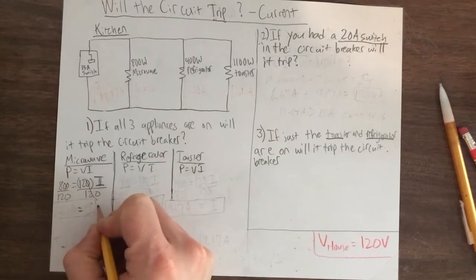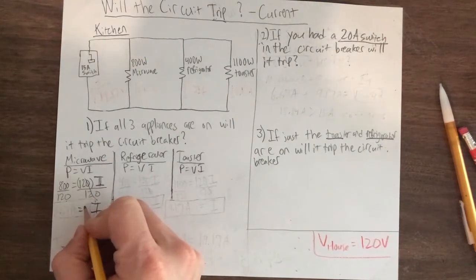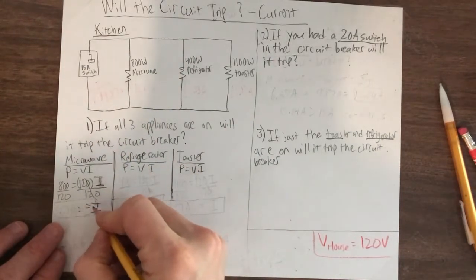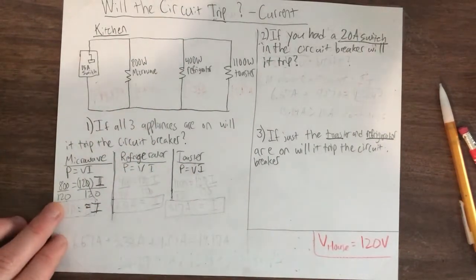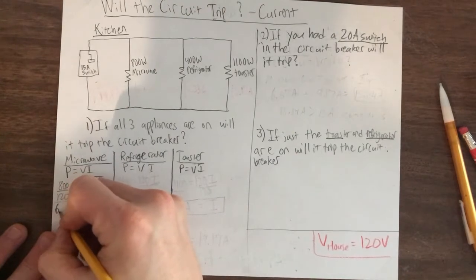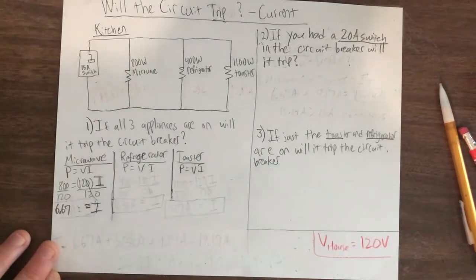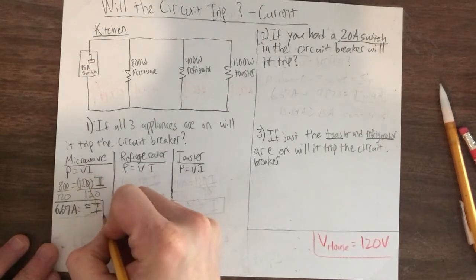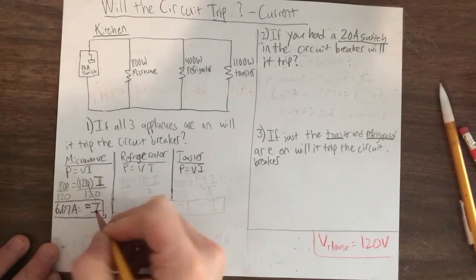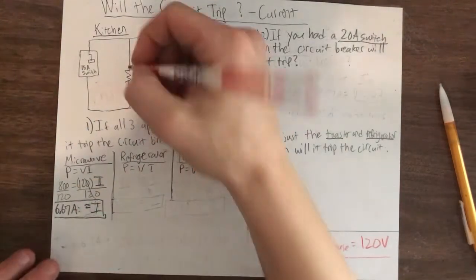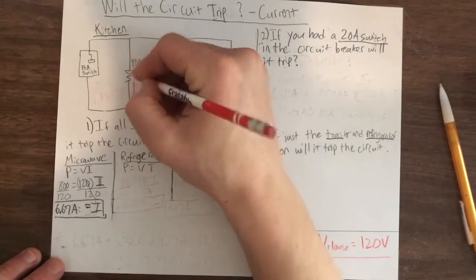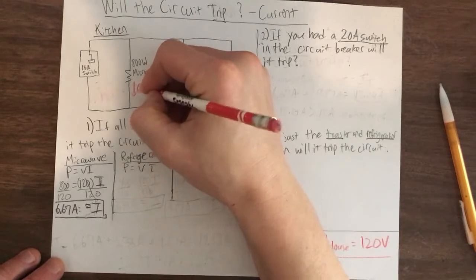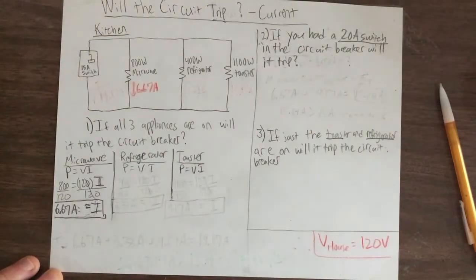On the left side we have I left over for current. On the right side, 800 over 120 gets 6.67, and that'll be amps for the unit for current. So it's the current coming from the microwave. I'll use a colored pencil to write 6.67 amps coming from the microwave there.